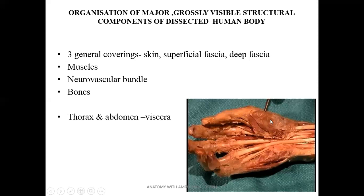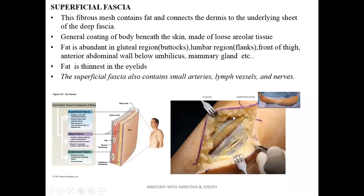This picture shows the hand after removing the deep fascia, where muscles are exposed. Tendons can also be seen in this area. Superficial fascia is seen below the skin. When cutting the skin, the superficial fascia is exposed, which is filled with fat. Skin has two layers: epidermis, which is superficial, and dermis, which is deep.